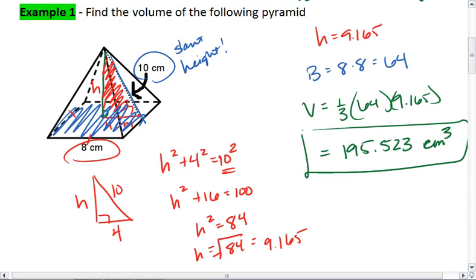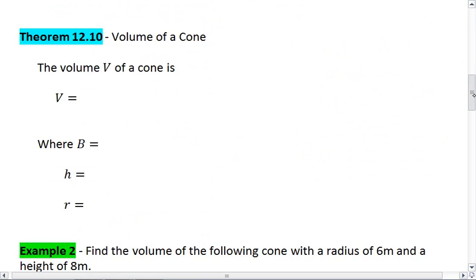And that's my final answer. The one thing you've got to be careful with pyramids is the height height is used for volume, whereas a slant height is used for surface area. Okay, next we're going to talk about the volume of a cone.